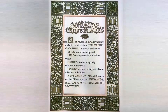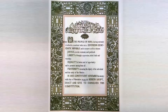The preamble of the constitution reads: 'We the people of India have solemnly resolved to constitute India into a sovereign socialist secular democratic republic and to secure to all its citizens justice — social, economic and political — liberty of thought, expression, belief, faith and worship, equality of status and of opportunity, and to promote among them all fraternity assuring the dignity of the individual and unity and integrity of the nation. In our constituent assembly this 26th day of November 1949 do hereby adopt, enact and give to ourselves this constitution.' This is beautifully worded so that all the basic philosophy and basic structure is incorporated in the preamble.